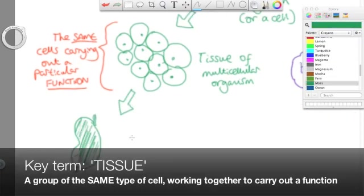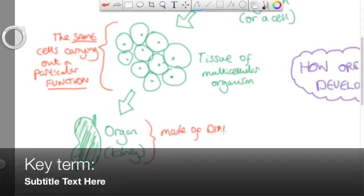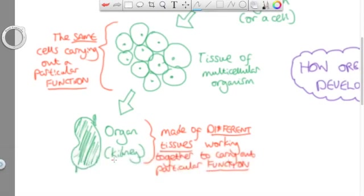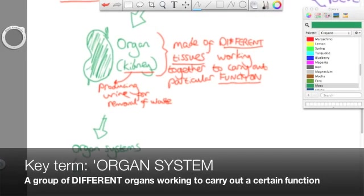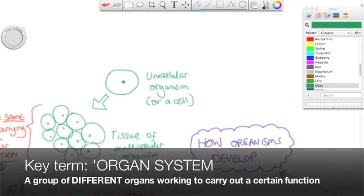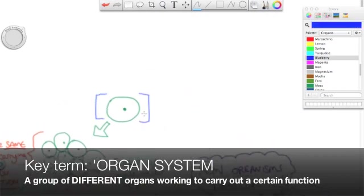Now these different tissues can come together and different tissues can come together to form an organ such as this kidney. Other organs could be the lungs and heart and so on. And they're made of different tissues all working together to carry out a certain function. So a kidney, for example, will create urine to get rid of urea as a waste product. The heart will pump the blood and so on. And different tissues work together. Now different organs can work together to make organ systems such as the respiratory system and so on.